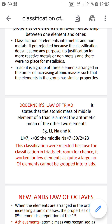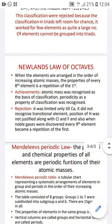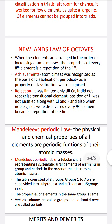The triads were rejected because classifying in triads always left room for chance. It worked well for only a few elements available at the time, but for a larger group it never worked out. So this was discarded. Next came Newlands and his famous Law of Octaves.